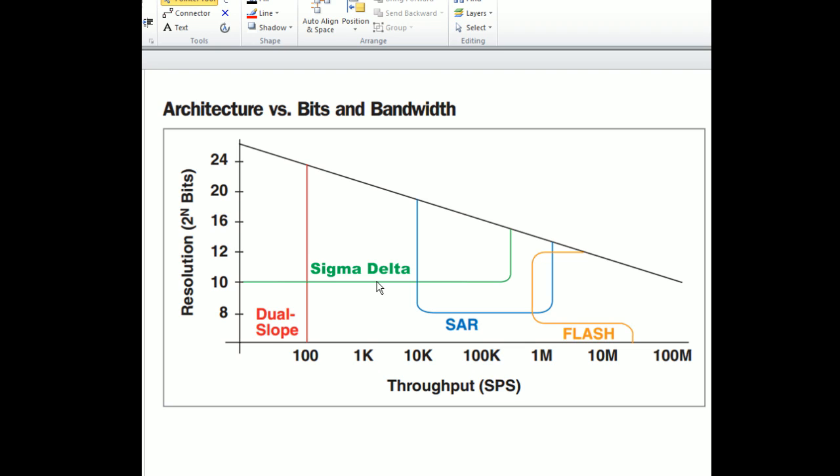Successive approximation—you'll find this a lot of times in your little controllers and whatnot. It's cheap and it's kind of right in the middle here where we've got a resolution and our throughput. And then flash, which sounds fast. Well, look where it is. It's up in the high throughput speeds, but it's limited in resolution.